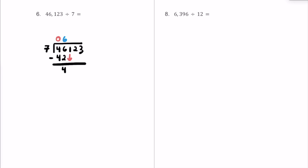Let's bring down this 1 so it's now 41. How many times does 7 fit into 41? 7 times 5 is 35, and 7 times 6 would be 42, which is too much. So let's go with a 5. 5 multiplied by 7 is 35, and the remainder — subtracting — is going to be 6.